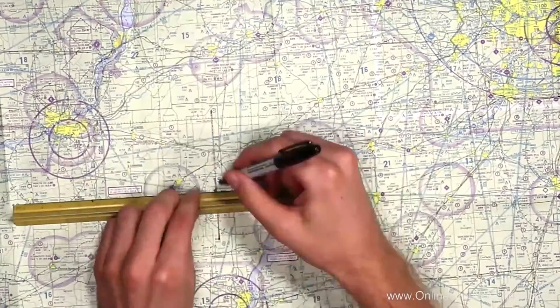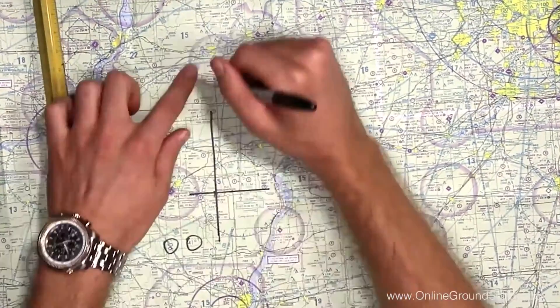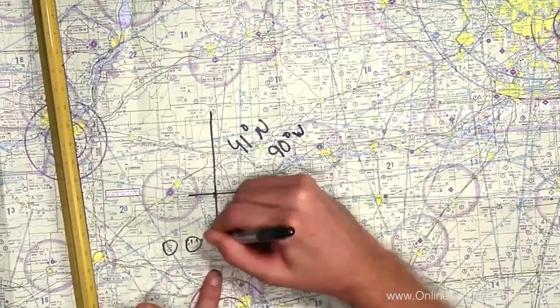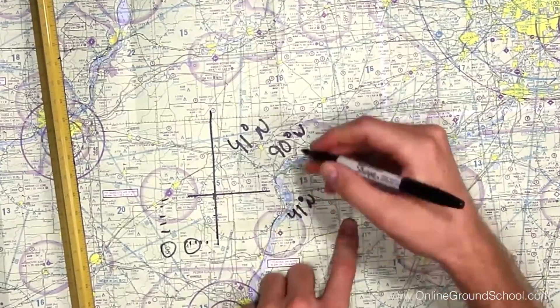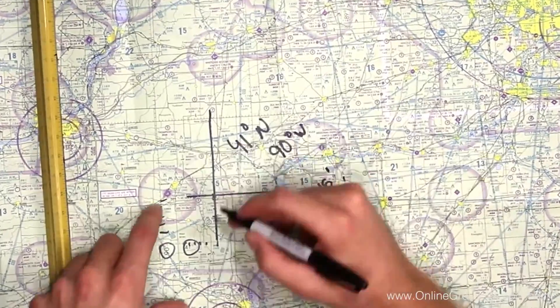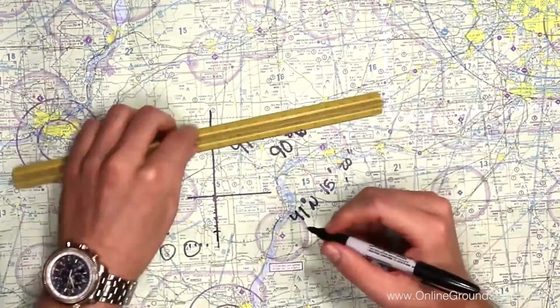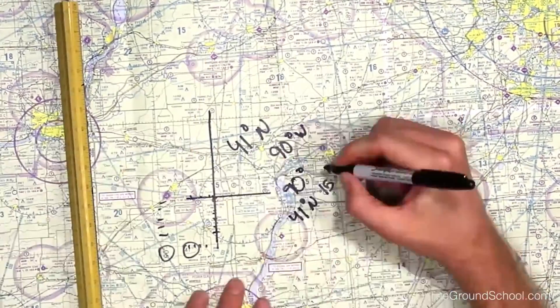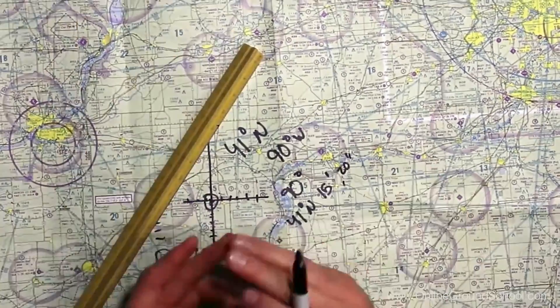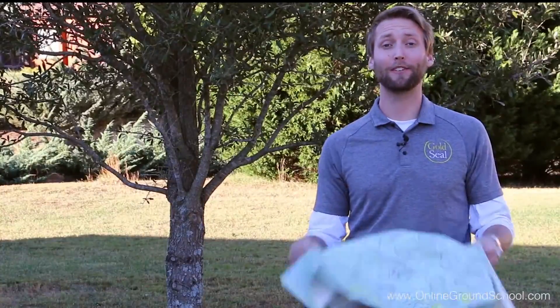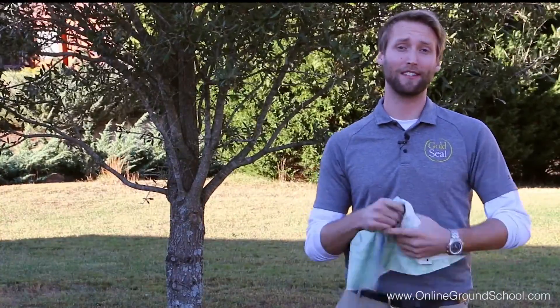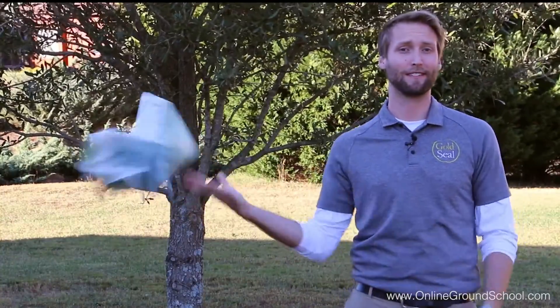For the Part 107 written exam, you're going to have to do this the old-fashioned way using a sectional chart. We show you how to do this in detail at OnlineGroundSchool.com, but in the real world there are much easier ways to get this information.